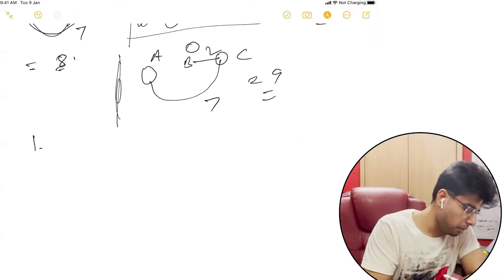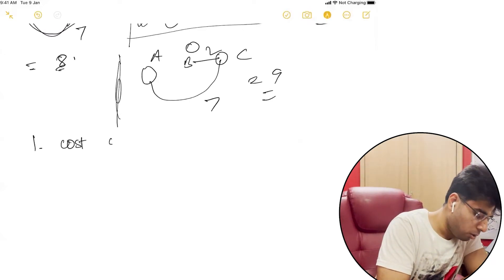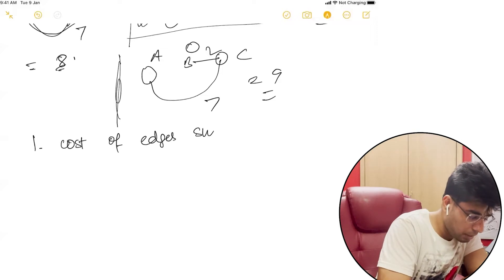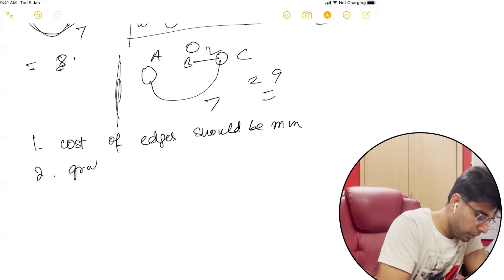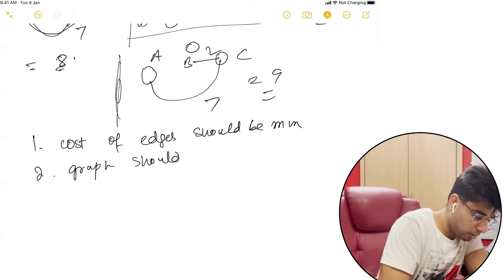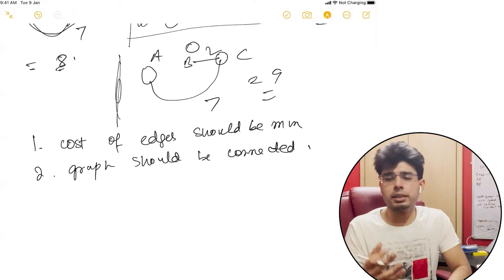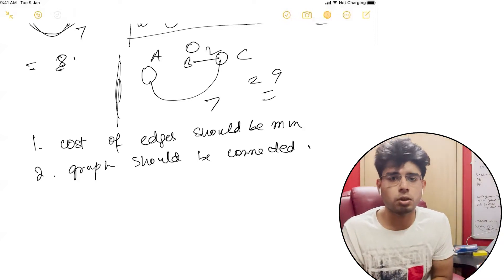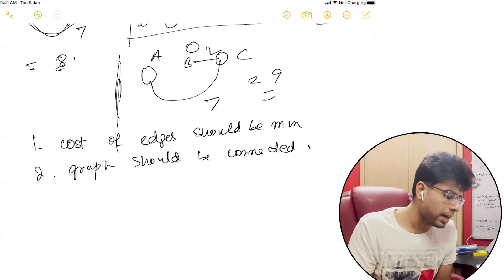What you have to remember is the cost of edges — the path should be minimum — and your graph should be connected. These are the two things. And since it is a tree, there won't be a cycle, but that's not trivial here and we won't go deep into that.